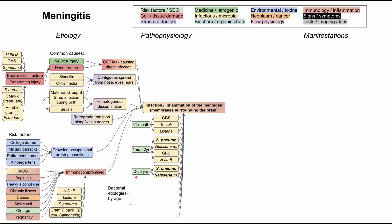In standard adolescents and adults aged two to 50, the most common causes are Strep pneumo and Neisseria meningitidis. Neisseria is more common in younger people, while Strep pneumo is more common in the older range of this group. In the elderly population, 50 years or older, Strep pneumo is again most likely, but they can also get E. coli, Listeria, Haemophilus influenzae type B, Neisseria meningitidis, and group B strep. There is a lot of overlap between the bugs across age groups.